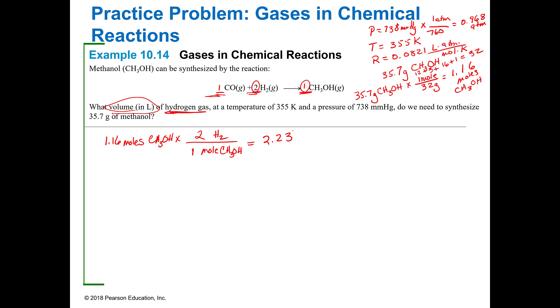Alright, so 2.23 moles of hydrogen gas. Now that I know the number of moles, I can plug it in as long as everything's in the right units, and I did that up front. So I'm solving for V. PV equals nRT, so V equals nRT divided by P.